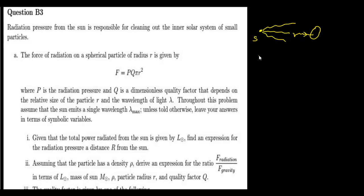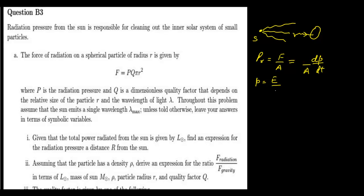Mathematically, radiation pressure equals the force experienced by these small particles divided by the corresponding area. We can write this force as dP/dt — the momentum transferred per second per unit area. The momentum corresponding to a photon is P = E/C, where E is the energy of the photon and C is the speed of light.